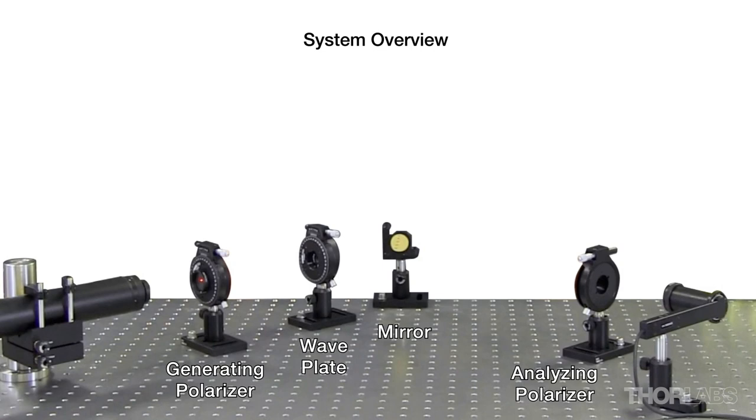Now that our system is aligned, here's a quick overview. The beam leaves the helium-neon laser and passes through the generating polarizer, the wave plate, reflects off the mirror and continues through the analyzing polarizer to the detector.